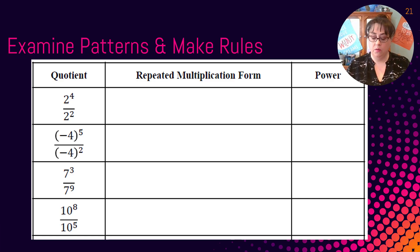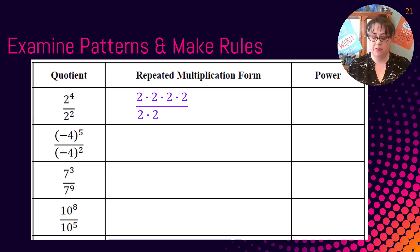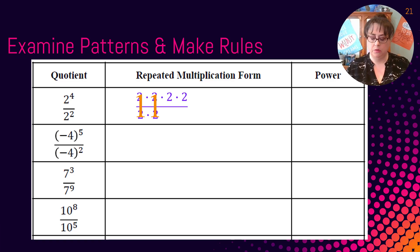To do this, let's expand out our exponents so that we have two times two times two times two, divided by two times two. We know that when we have the same number over itself, it's equal to one. So let's go ahead and do that, and look what we have left: two times two, which we know is equal to two squared.